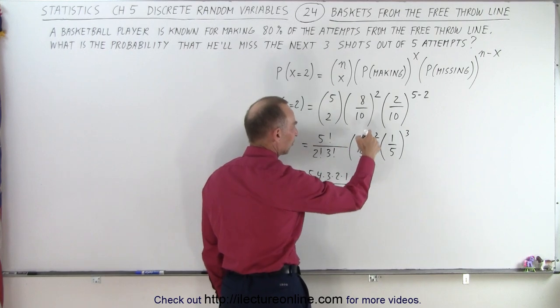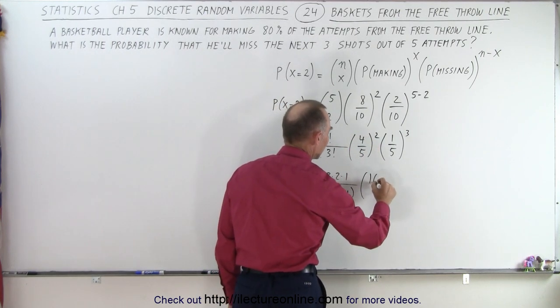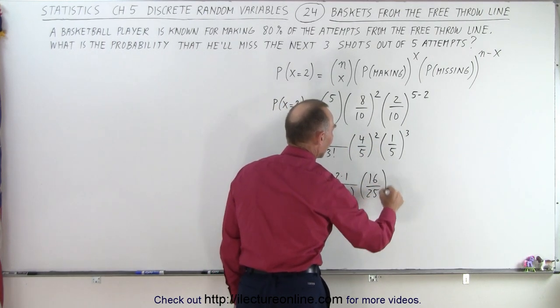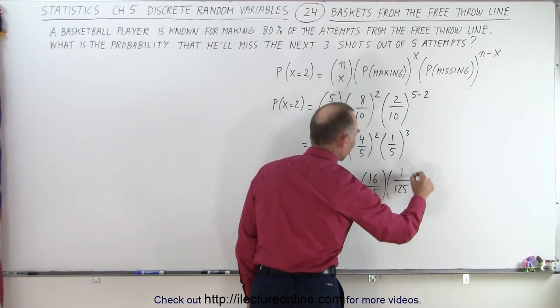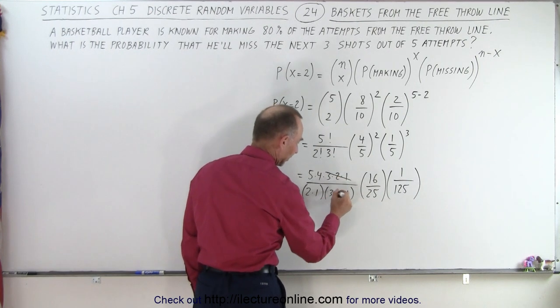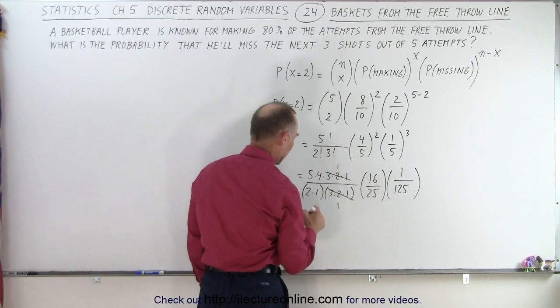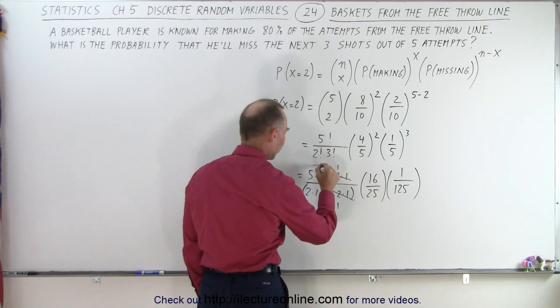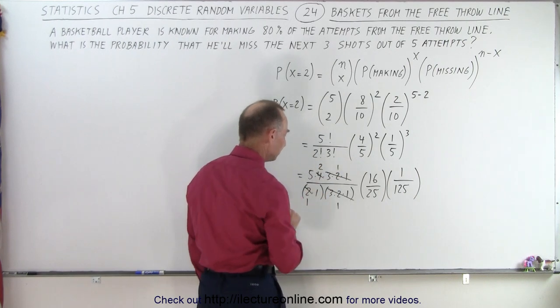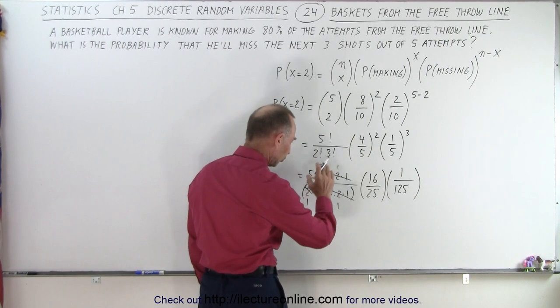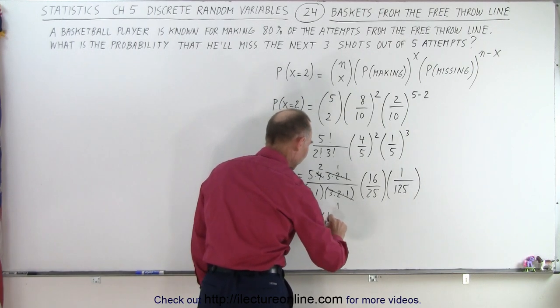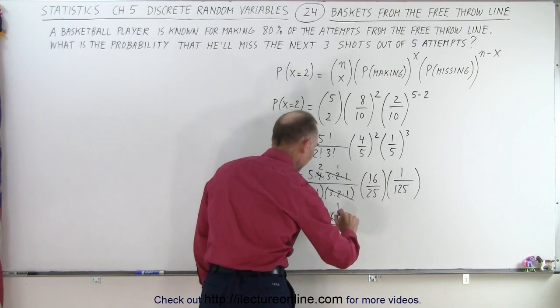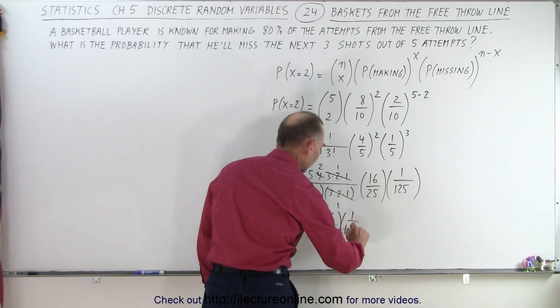Here we have four fifths to the second power. That would be 16 over 25. And here at one fifth to the third power, that would be one over 125. And here, to simplify that, this cancels out this. And four and two, they cancel. Four becomes two and two becomes one. In the denominator, we have all one, so two times five is ten. So this becomes ten times 16 over 25 and times one over 125.